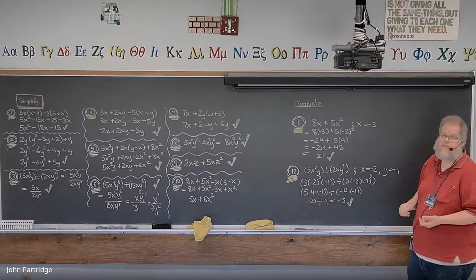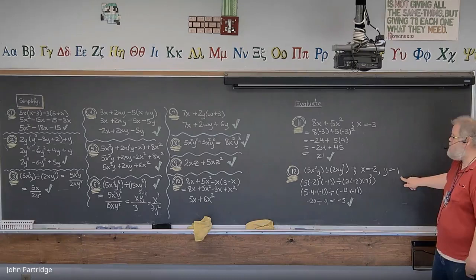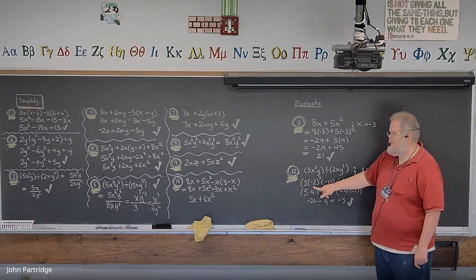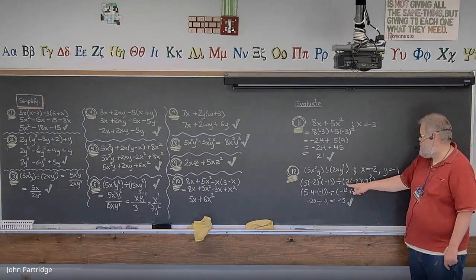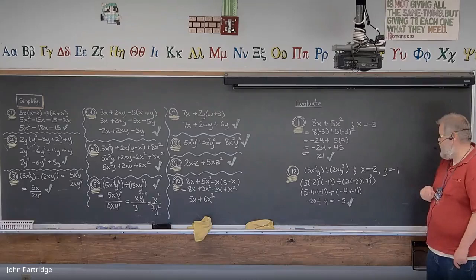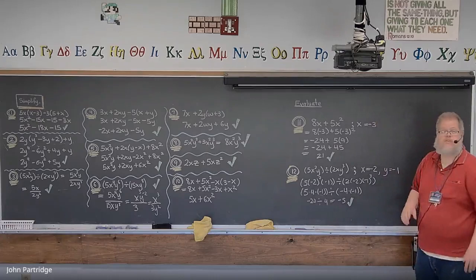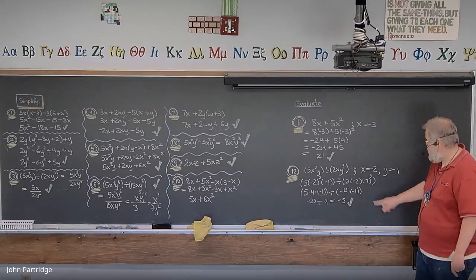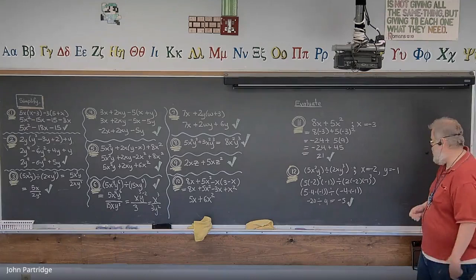Problem 12: evaluate 5x²y divided by 2xy³ at x = -2 and y = -1. Numerator: 5(-2)²(-1) = 5(4)(-1) = -20. Denominator: 2(-2)(-1)³ = 2(-2)(-1)(-1)(-1) = (-4)(-1) = 4. So the final answer is -20 divided by 4, which equals -5.